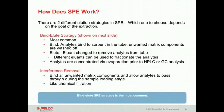Now we're going to look at how SPE works. There are two different elution strategies in SPE, depending on the goal of the extraction. Strategy one is the bind-elute strategy, which is the more common strategy. The analytes are bound to the sorbent, unwanted matrix components are washed off, and then the analytes are eluted. Different elution conditions can elute different analytes, so fractionation is also possible with this method.